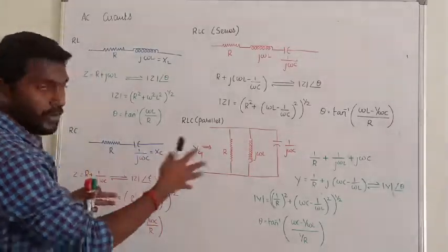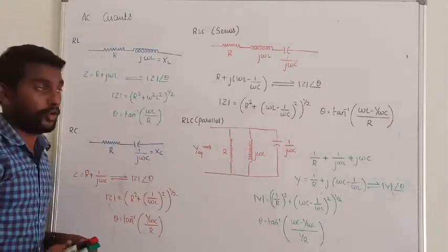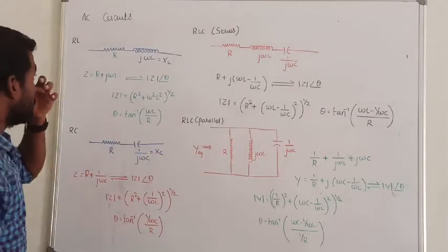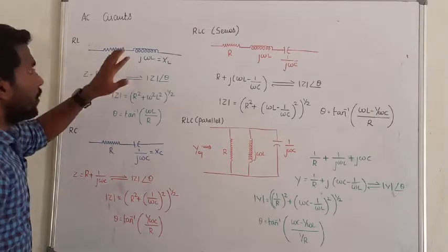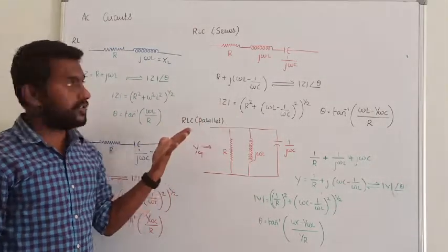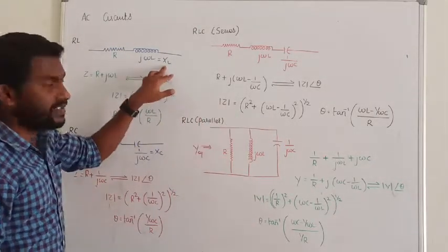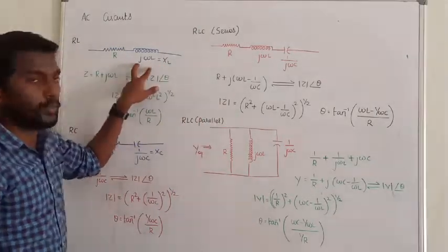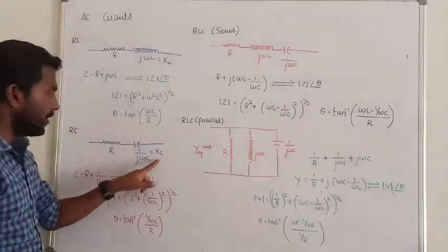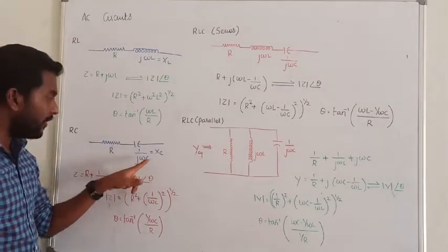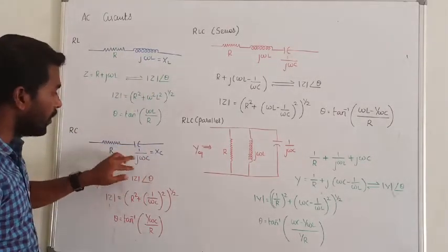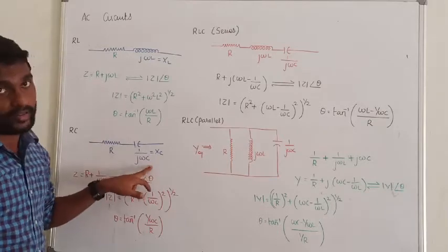This is the first step. Let us see some of the basics that should help in solving the models. First step: in AC circuits, a resistor is represented at its index value R, an inductor is represented as jωL, and a capacitor is represented as 1/jωC.